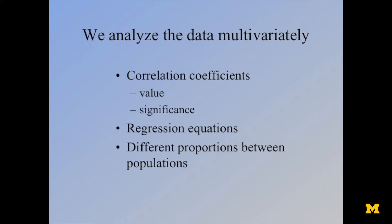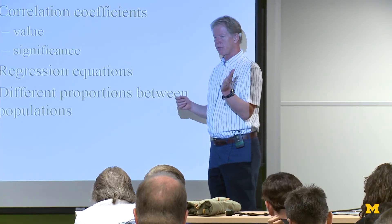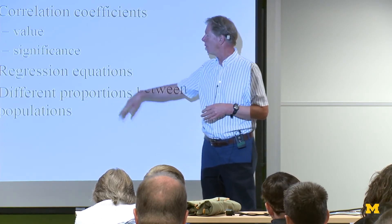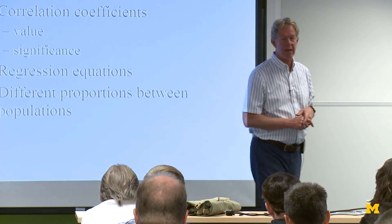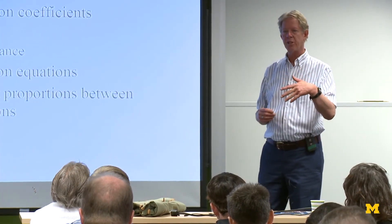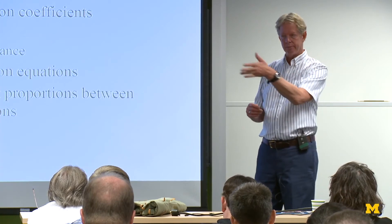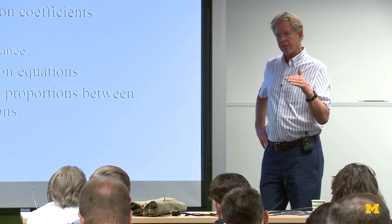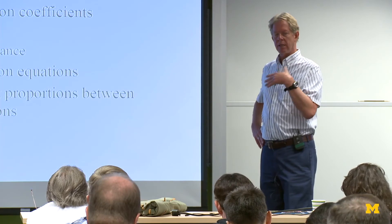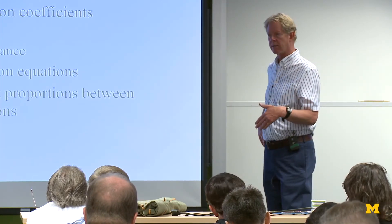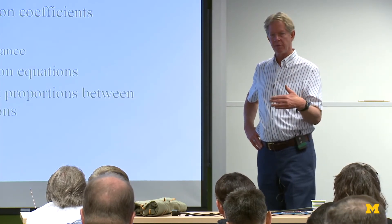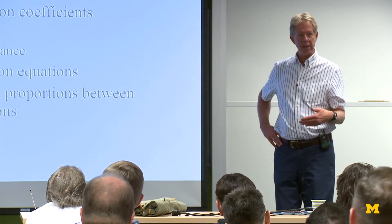Correlation coefficients are simply a measure of the relationship between two or more variables. It goes from zero to one — zero meaning no relationship and one meaning a perfect relationship. I want to caution you about the statistical significance of that. If you use a statistical package, it will give you the R value — 0.73 or whatever it is — and also a statistical significance. The test it's responding to is: is this correlation coefficient statistically different from zero? If you have a large enough N, almost any of them is different from zero, so it may be statistically significant but not very important.